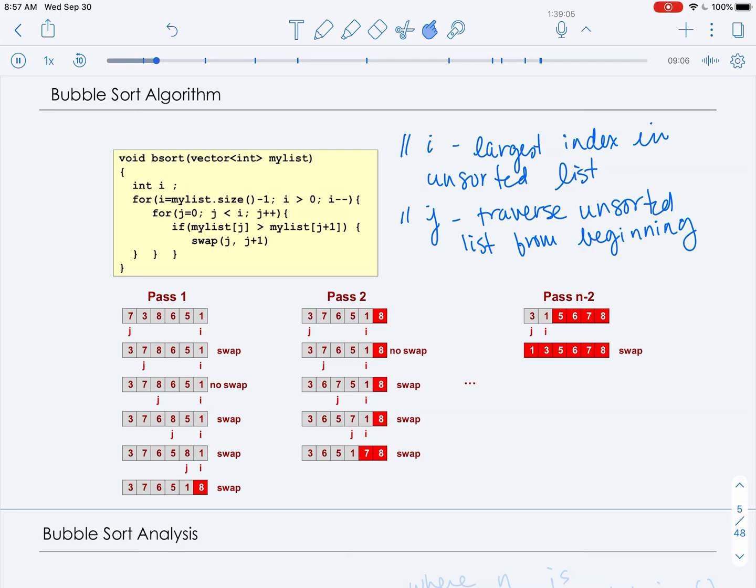And then you'll notice that our index j is traversing the unsorted list from the beginning to the largest index. So for each of the largest indices, we are going to traverse the list from left to right. So that's what j is doing, and it looks at adjacent pairs in the list, and if the element in the list at position j is greater than the element at j plus 1, it swaps them. So it swaps the adjacent pairs.